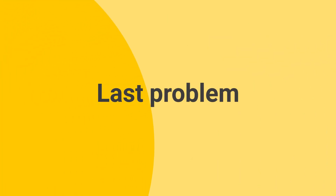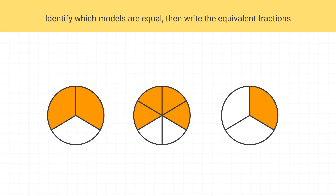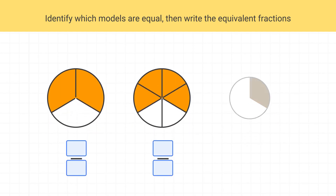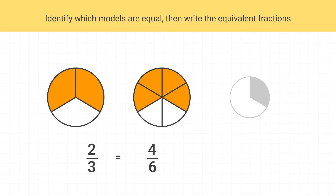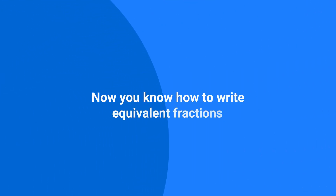Here's one last problem for you to practice with. Identify which of these models are equal and write the equivalent fractions. When you look at the models and ignore the lines, you can see this one and this one have the same amount shaded. This model is two thirds and this one is four sixths. Therefore, you can write that two thirds is equal to four sixths. Great work — now you know how to identify and write equivalent fractions. That's all for now, and stay tuned for next time.